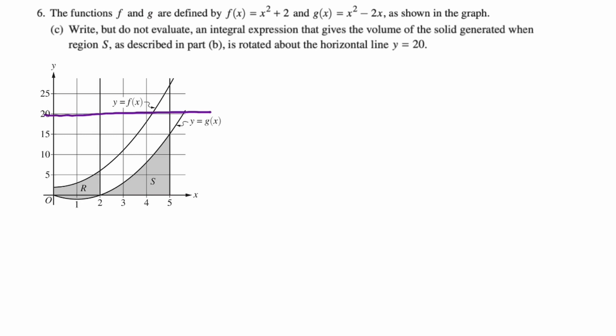So what's going to happen is you're going to get a big radius and a small radius. I'm going to color code them. So your big radius goes all the way from the x-axis up to 20. The little radius goes just from g up to 20.